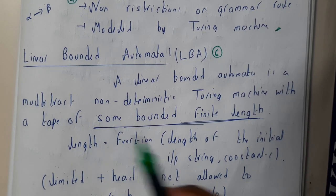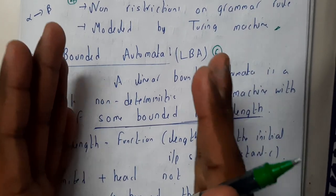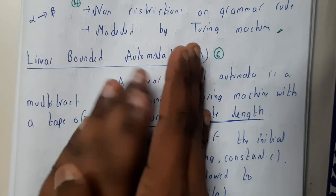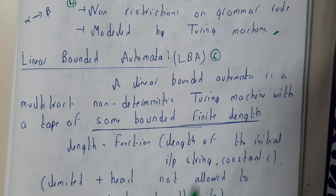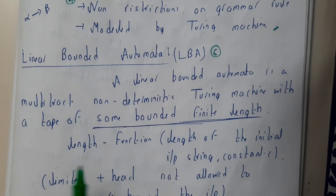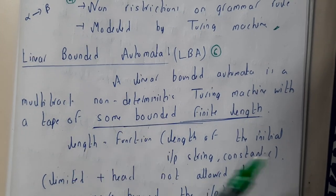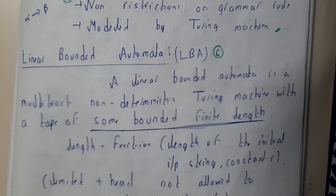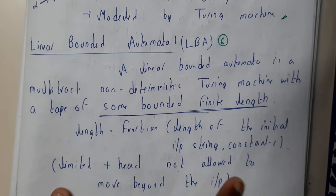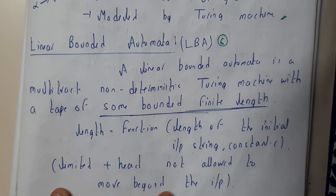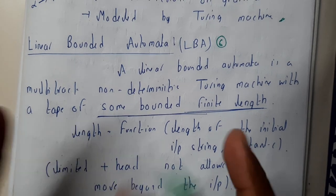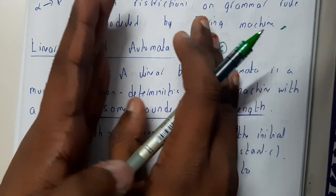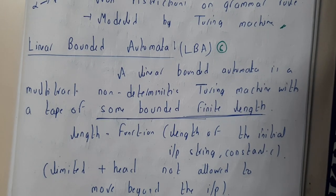There is a fixed length — from here to here only — it can move. The head can move only within this range. The head cannot move beyond that, so the head is not allowed to move beyond the input. If this is the input, it will be moving here only.